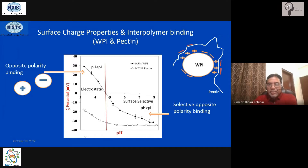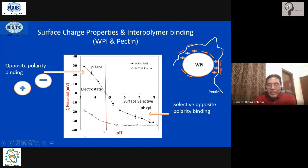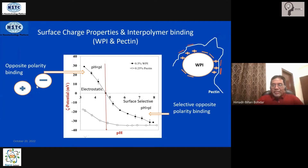To the left of the red line on the graph, because the molecules are oppositely charged, they will bind at all pH values very nicely through electrostatic interactions. Since one is positively charged and the other negatively charged, you will have complex formation and the formation of nanoparticles in that region.